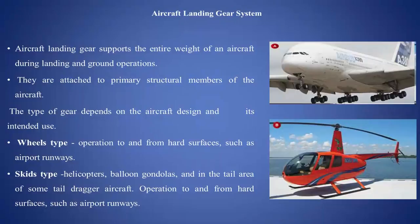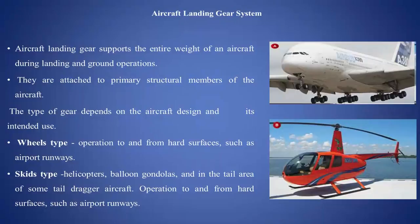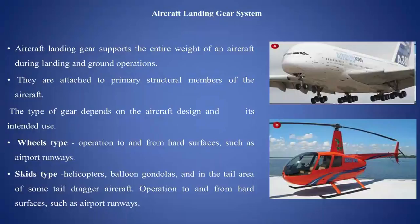Aircraft landing gear supports the entire weight of an aircraft during landing and ground operations. The complete weight of the aircraft is supported on the landing gear during landing as well as all ground operations. These landing gears are attached to the primary structural members of the aircraft. The type of gear depends on the aircraft design and its intended use — the type and design depends on the utility of the aircraft.